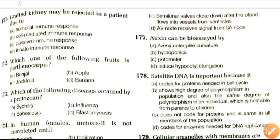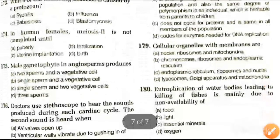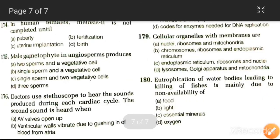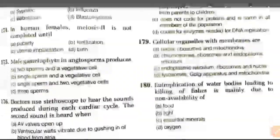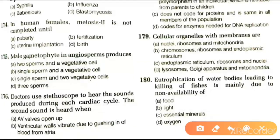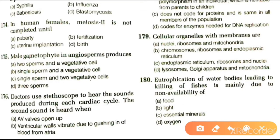Next question: in human females, meiosis is not complete until — puberty, fertilization, implantation, or birth. The answer is fertilization.